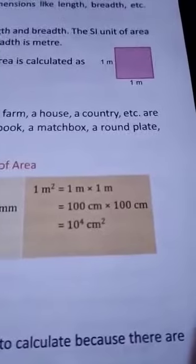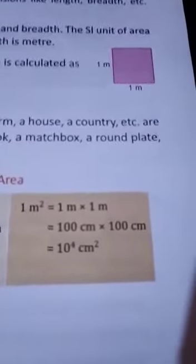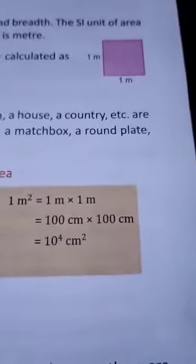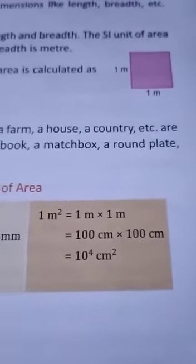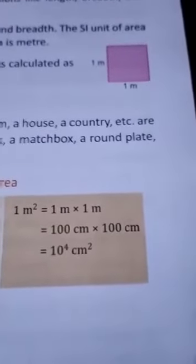Area is actually the space occupied by a two-dimensional figure on a plane. Two-dimensional figure means one which has got length and breadth. It is a derived quantity because it is depending on other two quantities like your length and breadth.